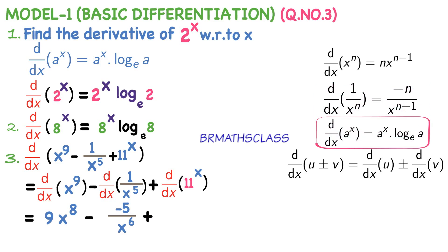For d by dx of 11 power x, it is of the form a power x. The derivative of a power x is a power x into log a base e. So, the derivative of 11 power x is 11 power x into log 11 base e. In these three classes, we learned three formulas: derivative of x power n is n into x power n minus 1; derivative of 1 by x power n is minus n divided by x power n plus 1; derivative of a power x is a power x into log a base e.